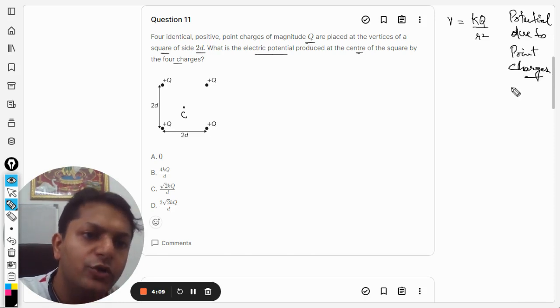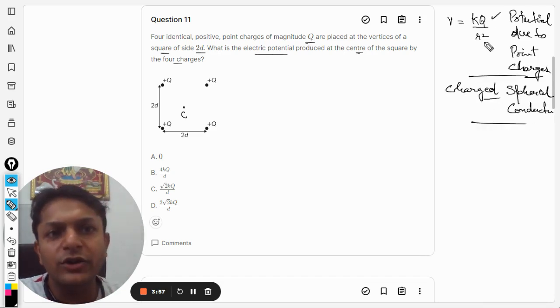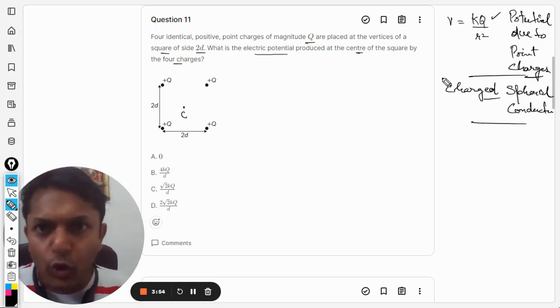Or due to spherical conductor, charged spherical conductor. Obviously the charge has to be there. And if it is a spherical conductor we are going to use this formula. If it is a point charge as given in our question, we are going to use this formula.